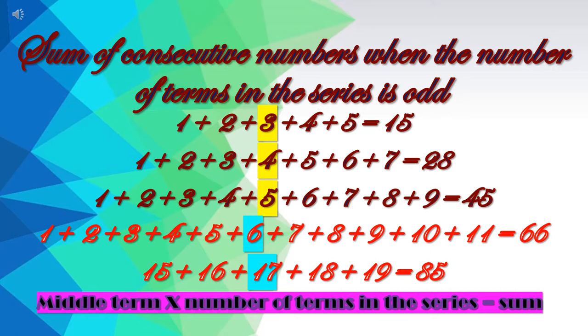And if we take 9 numbers — 1, 2, 3, 4, 5, 6, 7, 8 and 9 — their sum is 45. So children, let's observe the pattern in this.